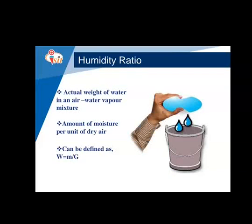Next is the humidity ratio. The humidity ratio is the actual weight of moisture present in 1 kg of dry air. It is expressed as w = m/g, where m is the actual weight of water in the air and g is the unit mass of dry air.